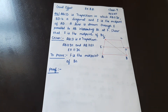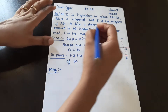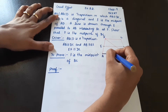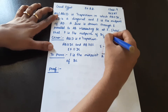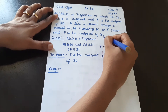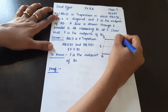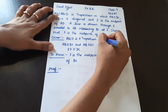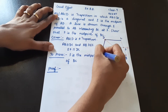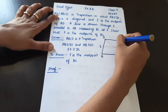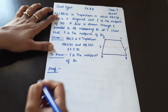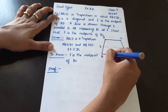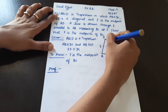So ABCD is a trapezium. A trapezium is defined as a quadrilateral in which one pair of opposite sides are parallel. Here, ABCD is a trapezium where AB is parallel to DC.